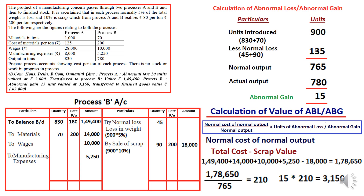Abnormal gain is recorded on the debit side of the process account — unlike abnormal loss which goes on the credit side. So 15 units at ₹210 = ₹3,150 is debited. Closing the units column: 900 each side. Finished product output: 780 units. Closing the amount column gives ₹1,63,800 as the value of finished product — at ₹210 per unit, consistent with the abnormal gain value per unit.